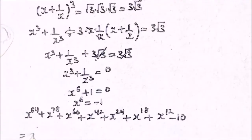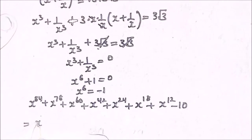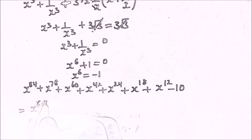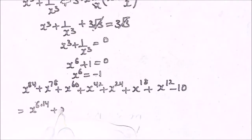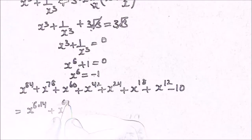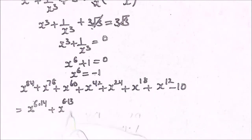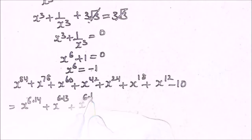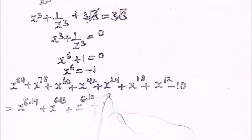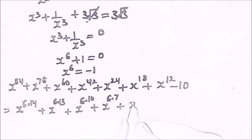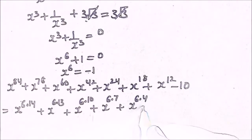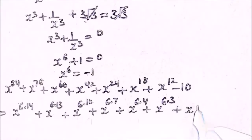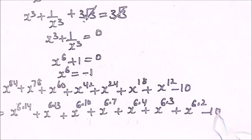x raised to the power 84 can be written as x raised to the power 6 multiplied by 14. Similarly we have x raised to the power 6 multiplied by 13 — since 6 times 13 is 78 — then x raised to the power 6 multiplied by 10, then x raised to the power 6 multiplied by 7, then x raised to the power 6 multiplied by 4, then x raised to the power 6 multiplied by 3, and x raised to the power 6 multiplied by 2, minus 10.